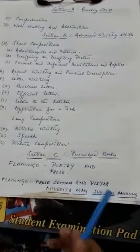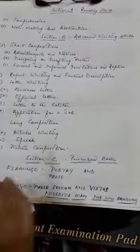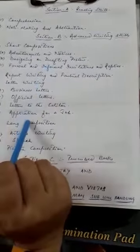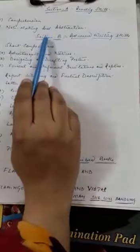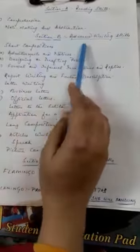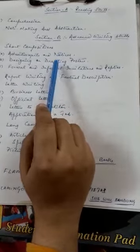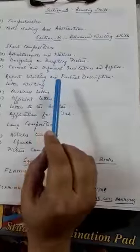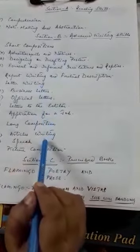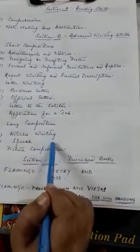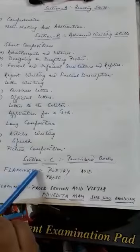As you know very well, in class 11 we have handled these chapters with proper notes — comprehensions we have handled, note making and abstractions we have completed. Your remaining chapters are short compositions; report writing we have handled, letter writing we have handled, long compositions — article and speech we have handled.